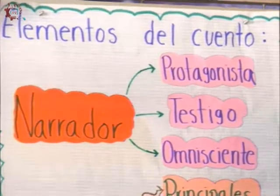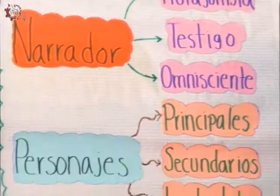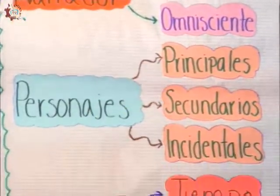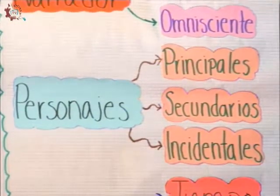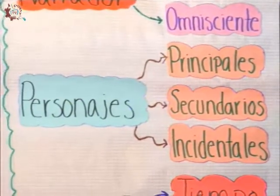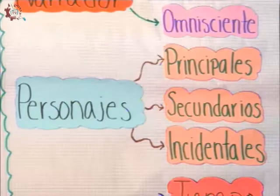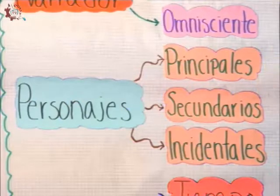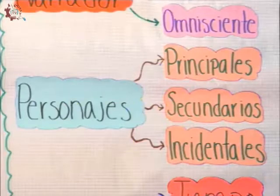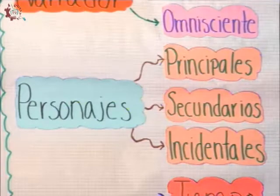Los personajes podemos encontrar también tres tipos: principales, secundarios e incidentales. Los personajes principales son aquellos de los que se nos cuenta su historia y tienen la intervención principal. Los personajes secundarios participan ayudando en el desarrollo de las acciones. Y los incidentales son aquellos que tienen una participación mínima o solo son nombrados en la historia. Con ambiente nos referimos al tiempo en el que se desarrolla la historia y al lugar en el que se está desarrollando.